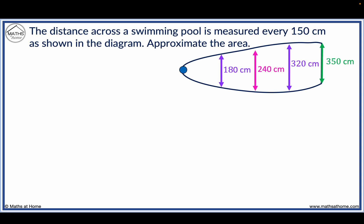The distance across a swimming pool is measured every 150 centimetres, as shown in the diagram. Approximate the area.